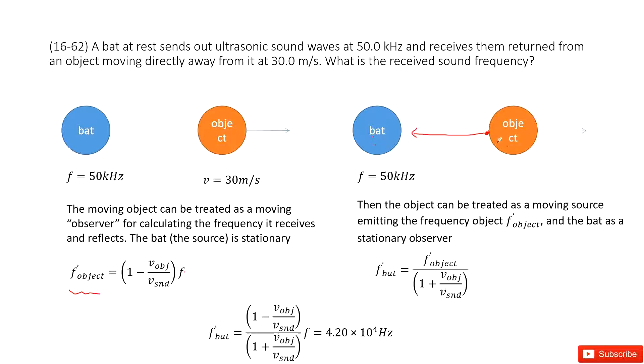So the source is moving away from the stationary observer, because it moves this way. So source moving away from the stationary observer. We select this function.